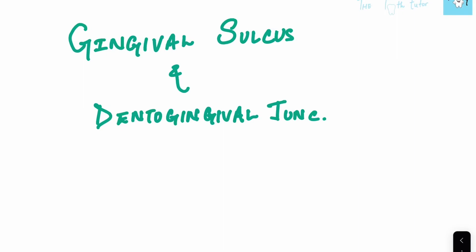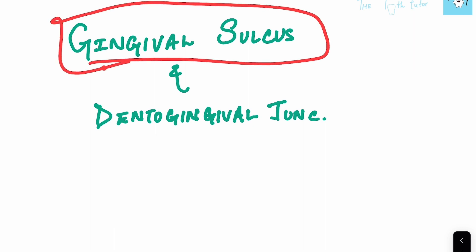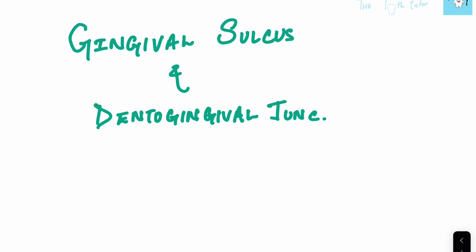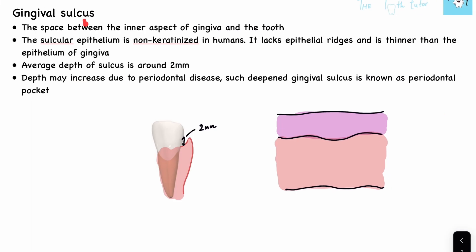Hi everyone. This is the fifth lecture on the chapter of OMN and will be the second last lecture. It won't be very long. We'll be talking about gingival sulcus and dento-gingival junction. These topics are mainly asked in short answer. Starting with the gingival sulcus.